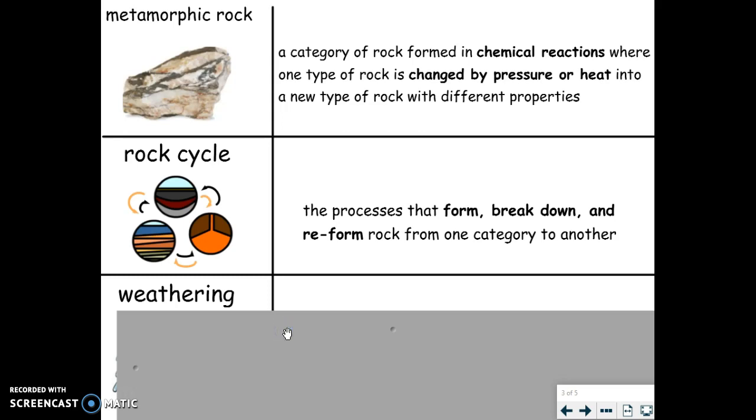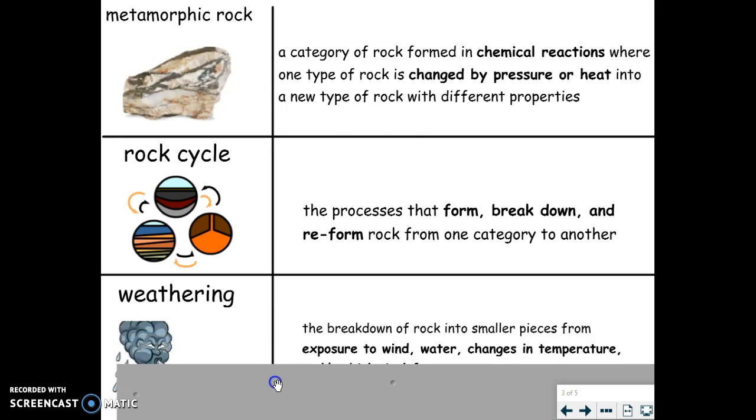Weathering: the breakdown of rock into smaller pieces from exposure to wind, water, changes in temperature, and/or biological forces. There are two kinds of weathering: mechanical and chemical. Please make sure to put that with your definition in parentheses. If you are ready, you can go on. If not, you should pause the video here and start when you are ready for the next card.